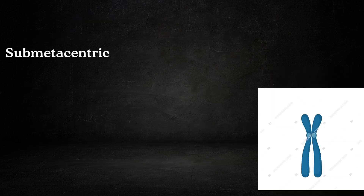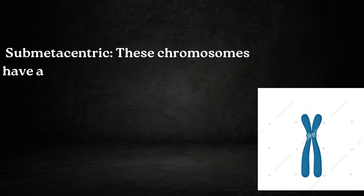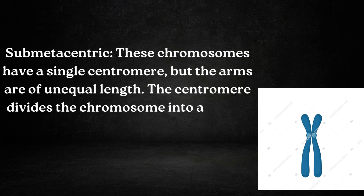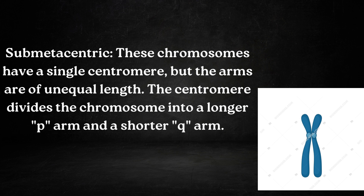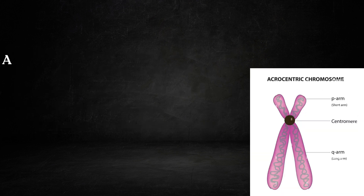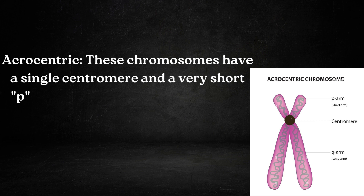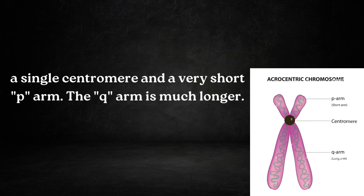Number second is sub-metacentric. These chromosomes have a single centromere but the arms are of unequal length. The centromere divides the chromosome into a longer p-arm and a shorter q-arm. Number third is acrocentric. These chromosomes have a single centromere and a very short p-arm, while the q-arm is much longer.